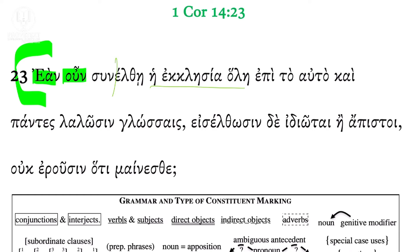And then you have sunelthē, meaning 'comes together.' That's from sunerchomai — it's a subjunctive, because ean takes a subjunctive. We see a stem change there: erchomai goes to elth, and sun adds a 'with-ness' to it. So: 'therefore, if the whole assembly comes together' — the whole Christian assembly comes together in one place. Epi to auto means 'together,' really stressing this togetherness. Epi to auto is a prepositional phrase; I put parentheses around that.